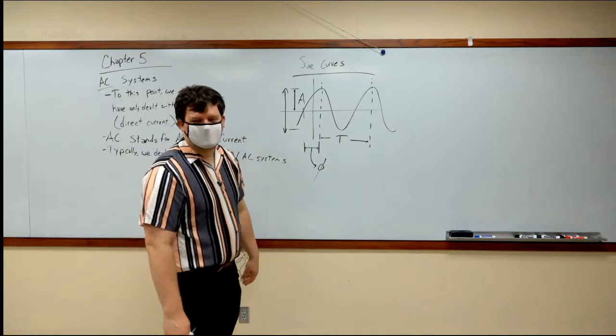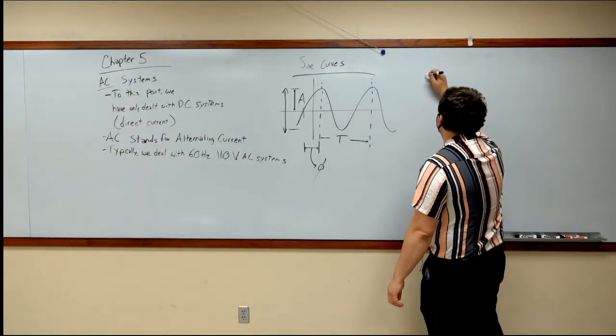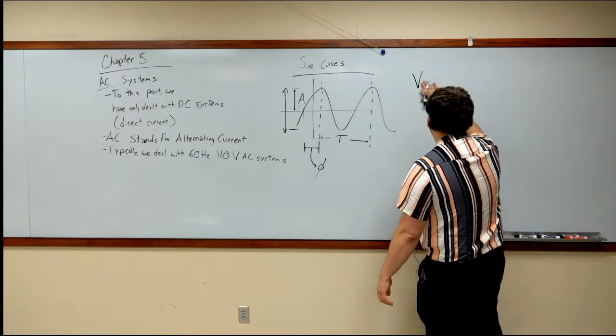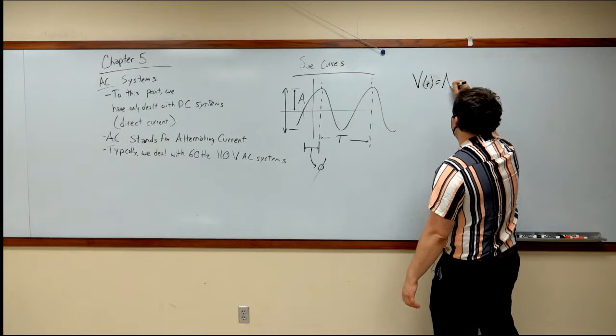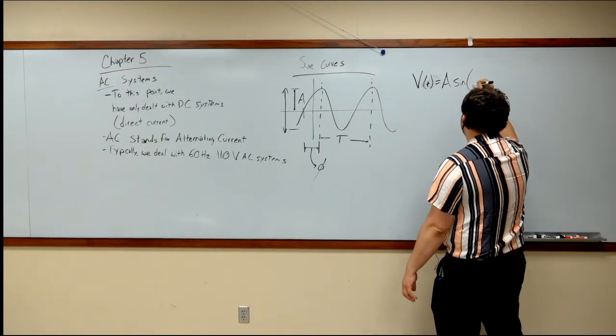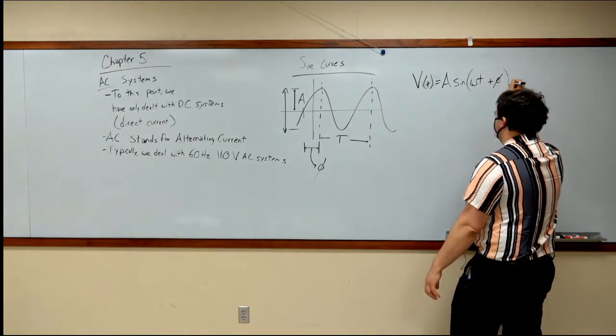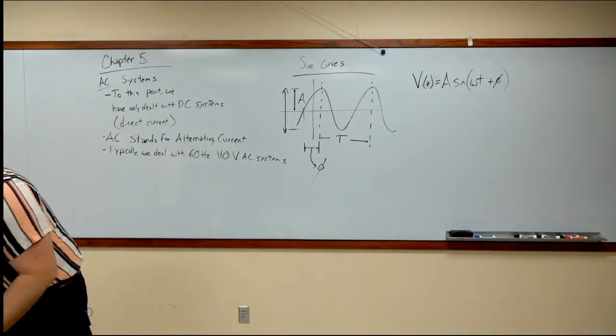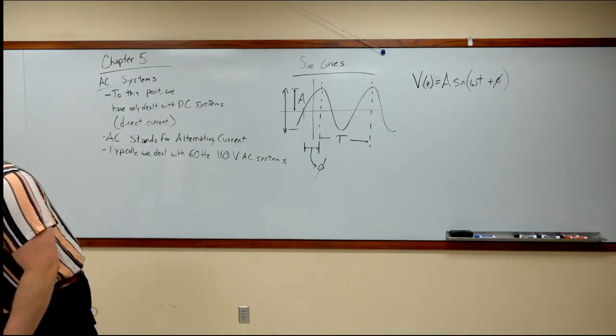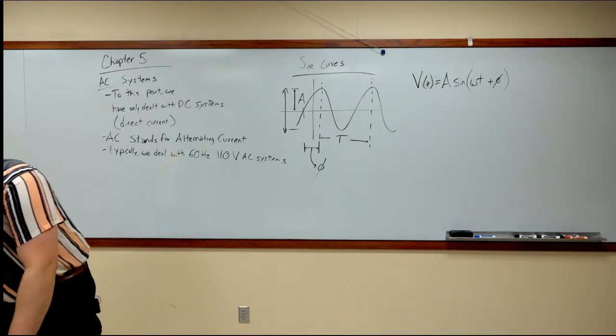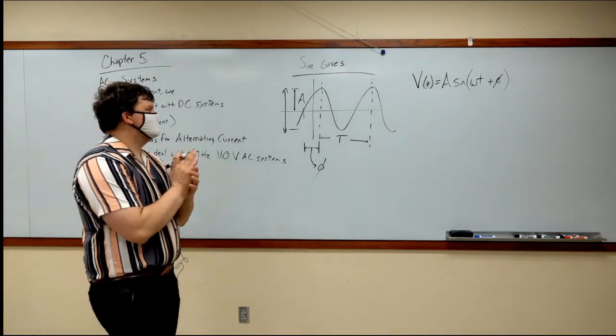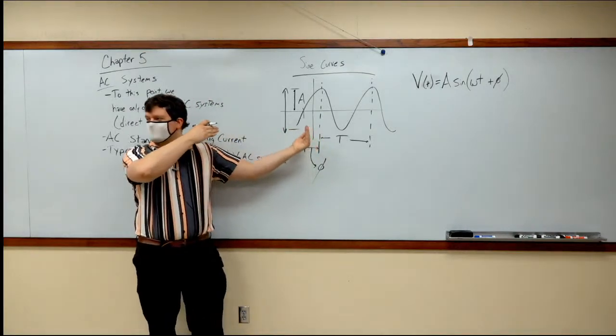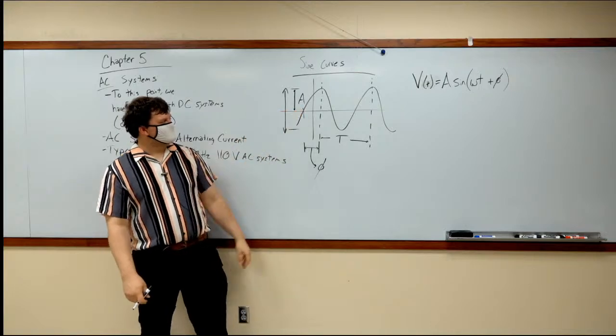The general form for a sine wave is v, the function of time is equal to A times sine omega t plus phi. I think it's plus. That's it. That's a sine curve. If we increase phi, the sine curve starts sooner. Just means it's offset from zero that much.